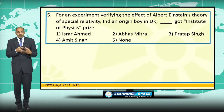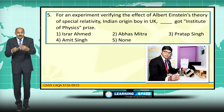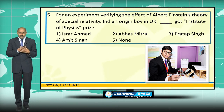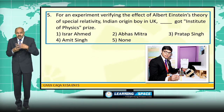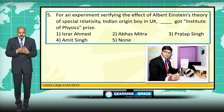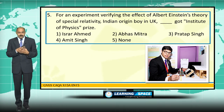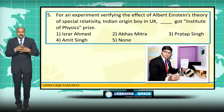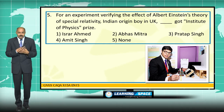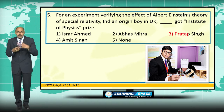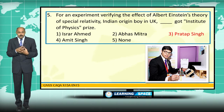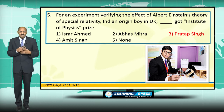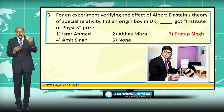For an experiment verifying the effect of Albert Einstein's theory of relativity — the theory was discovered during the early 20th century — an Indian-origin boy named Prathap Singh, studying in Cambridge, UK, verified the effect of Einstein's special theory of relativity and won the Institute of Physics prize. The Institute of Physics is situated in London, and the contest was held in Birmingham, England.